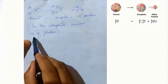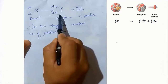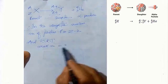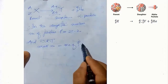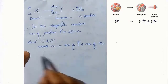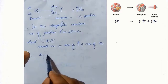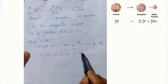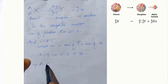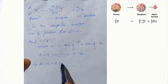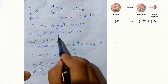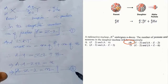Therefore, in the daughter nucleus the number of protons is Z minus 2. We know that mass number is equal to number of neutrons plus number of protons. The mass number is A minus 4, and the number of protons is Z minus 2. Solving for N, the number of neutrons: N equals (A minus 4) minus (Z minus 2), which gives A minus Z minus 2. From these results we can see that option B is the correct answer.